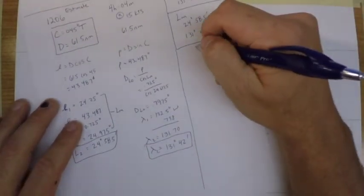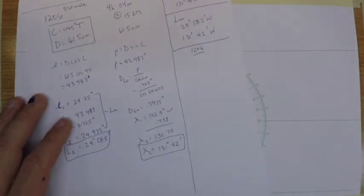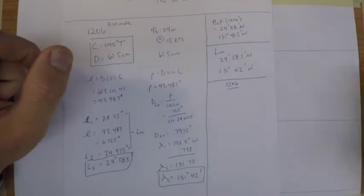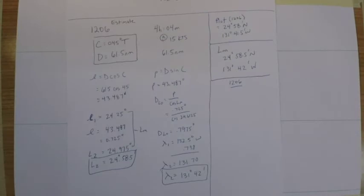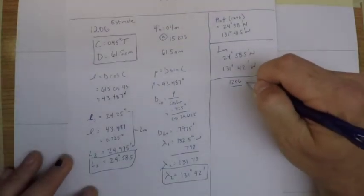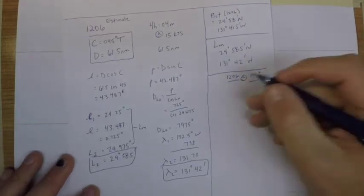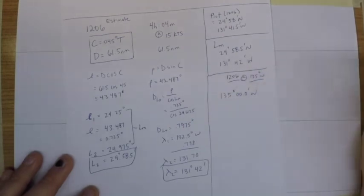We need to realize that this 1206 is actually going to be at the standard meridian 135 west. So we need to figure out how far away we are from that. We are at 131 degrees and 42 minutes west, so that would make us 3 degrees and 18 minutes away from the standard meridian.